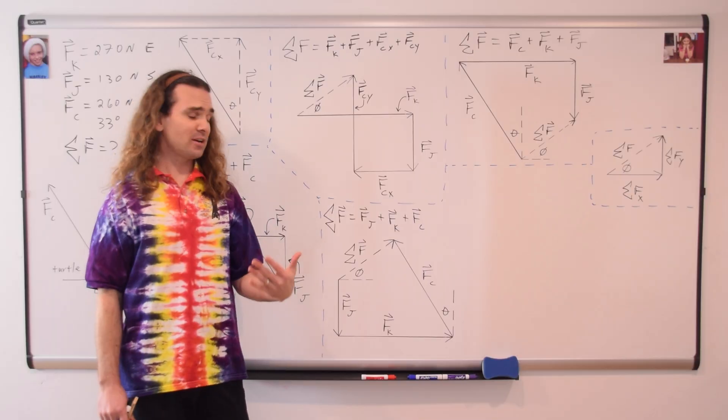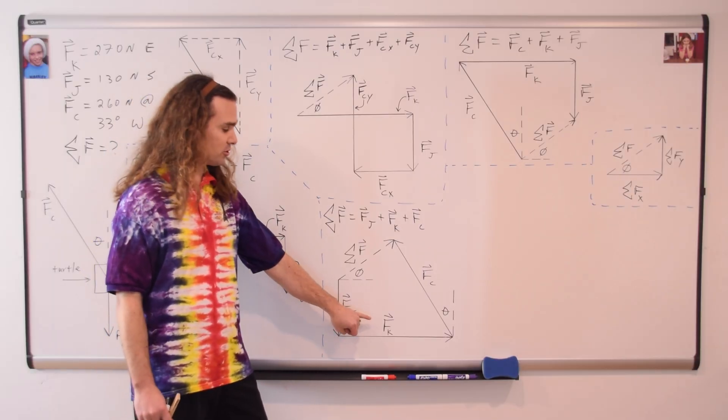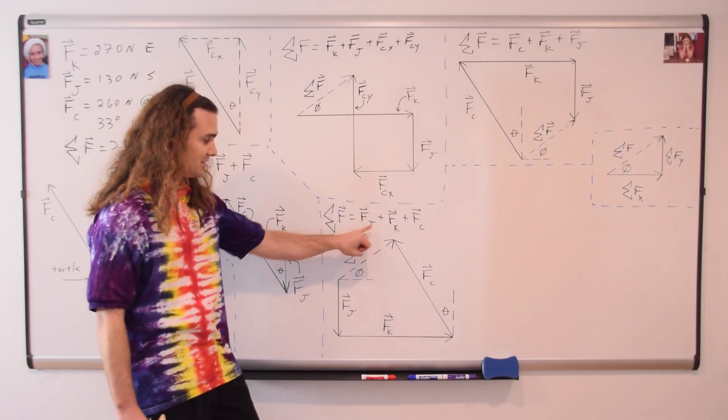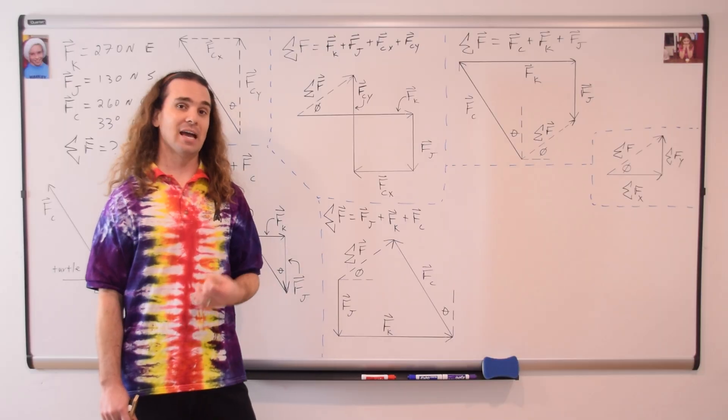We can use another different order: the force of Jim plus the force of Ken plus the force of Chris, and it still gives us the same net force.